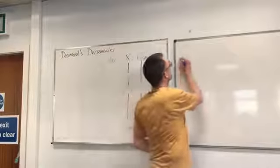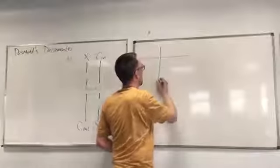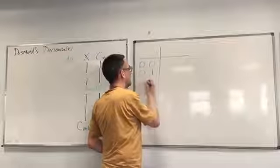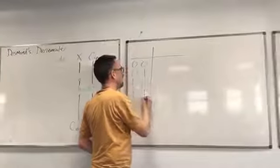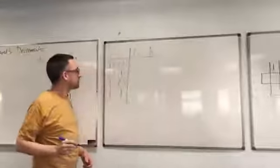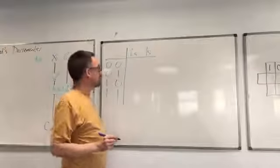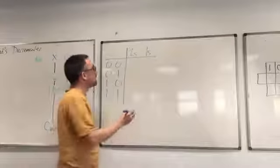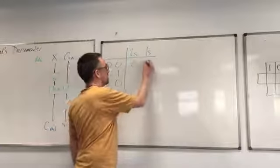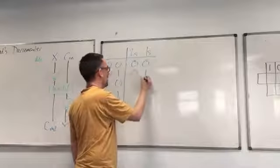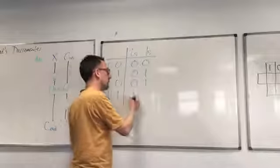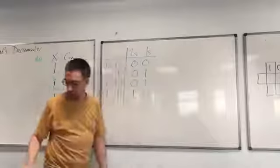What does a half adder do? It adds two binary numbers of place value 1 and gives back the answer as a two-bit binary number. We can figure it out just by adding: 0 plus 0 is 0, 0 plus 1 is 1, 1 plus 0 is also 1, and 1 plus 1 is 2.